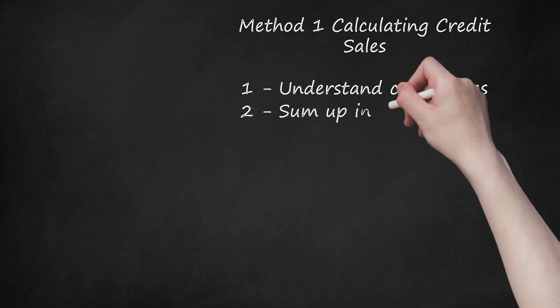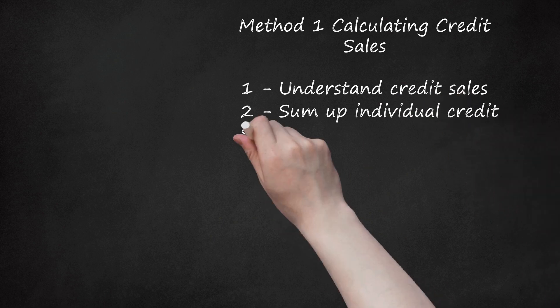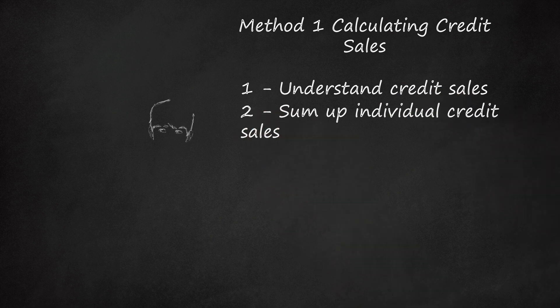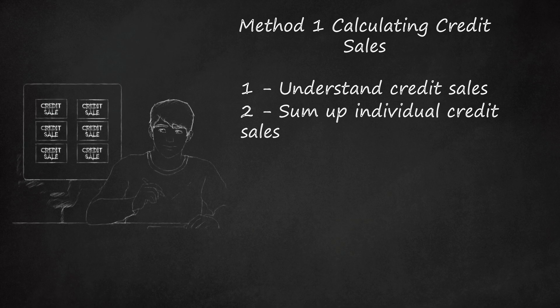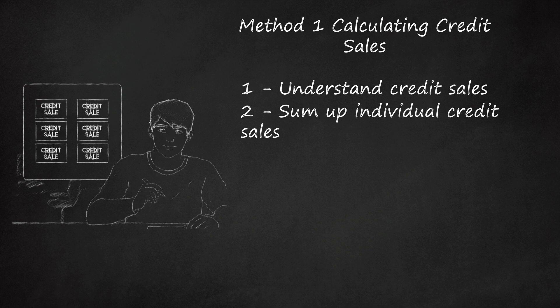Sum up individual credit sales. The simplest method used to find total credit sales is to maintain your accounts receivable account and to update it for each sale made on credit. This method is most accurate as it accommodates for changing product prices as well as all cash sales.